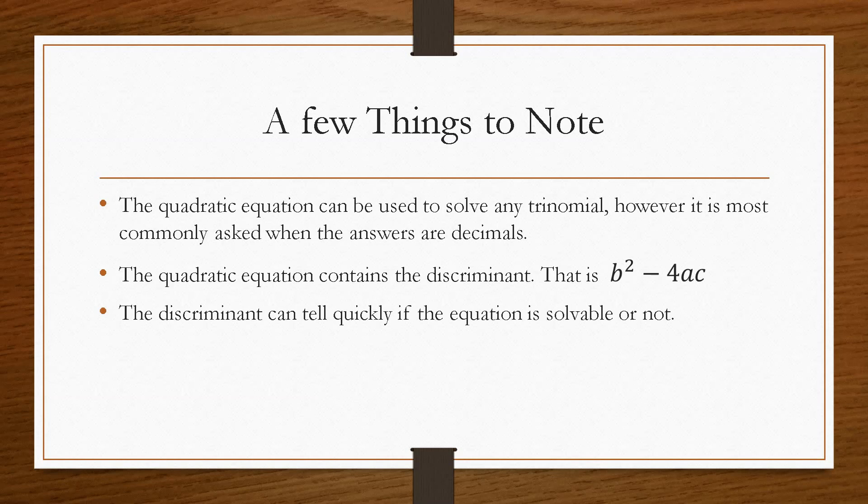So by the value that you get underneath the square root sign, if it is a whole number, it's solvable by the traditional trinomial method. If you get a decimal, it is solvable using the quadratic formula. And if you get a negative value underneath the square root sign, then it is classed as unsolvable.